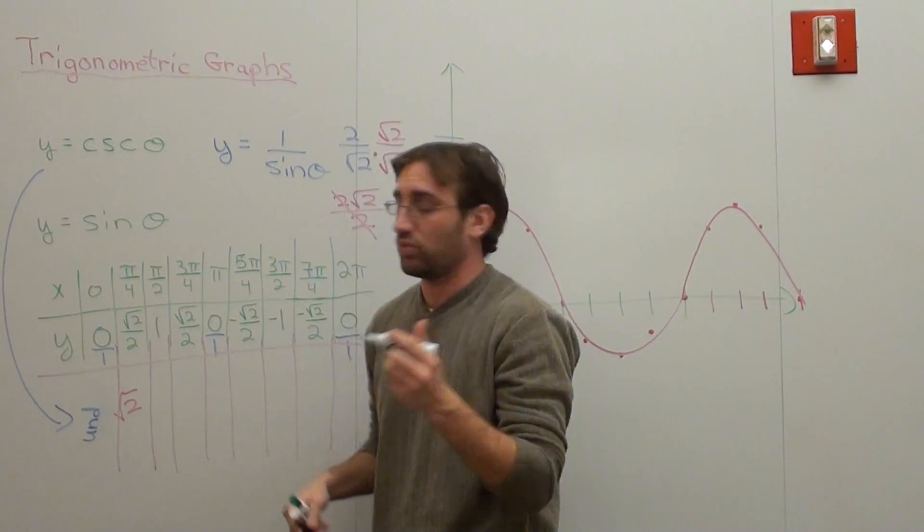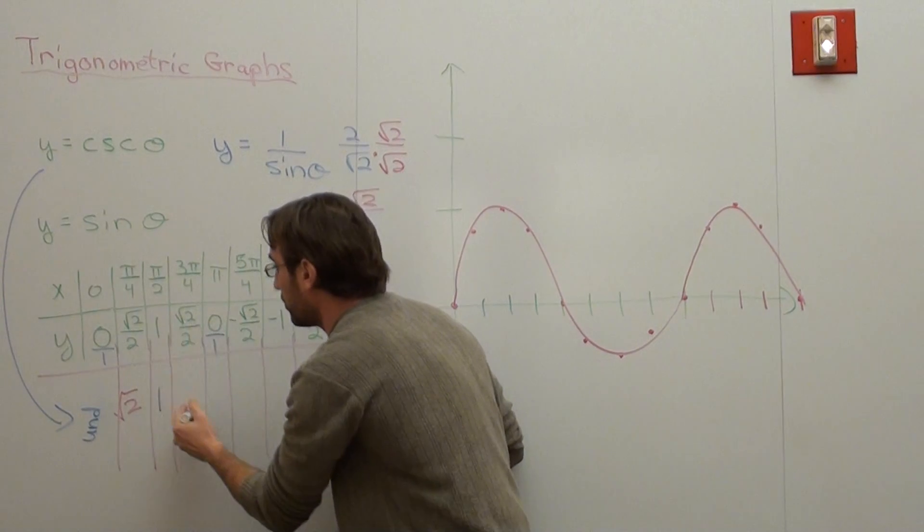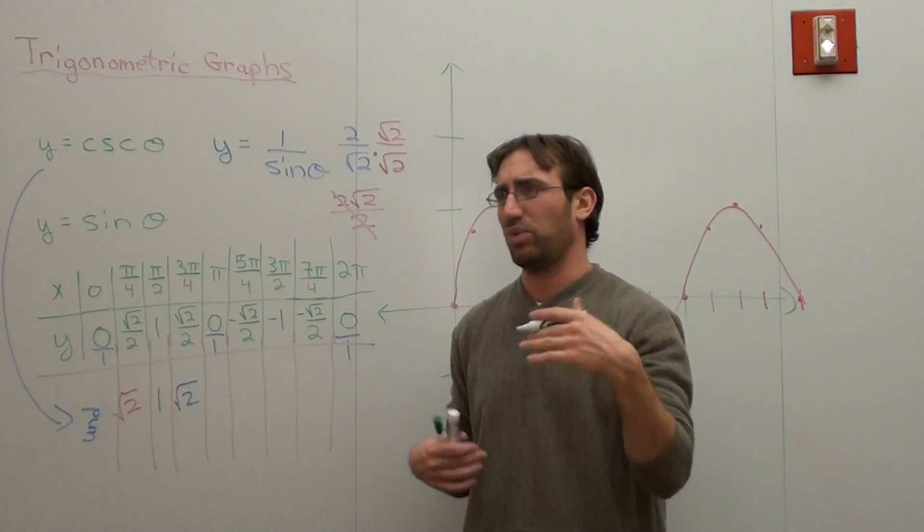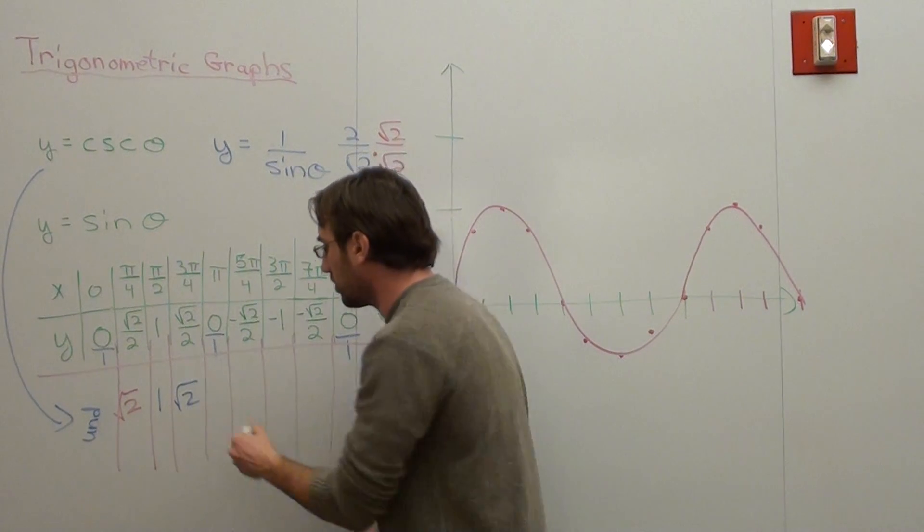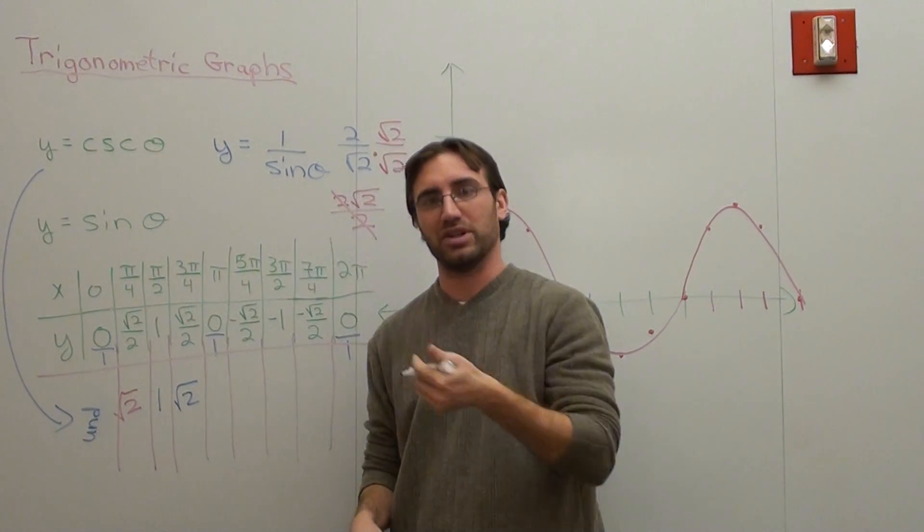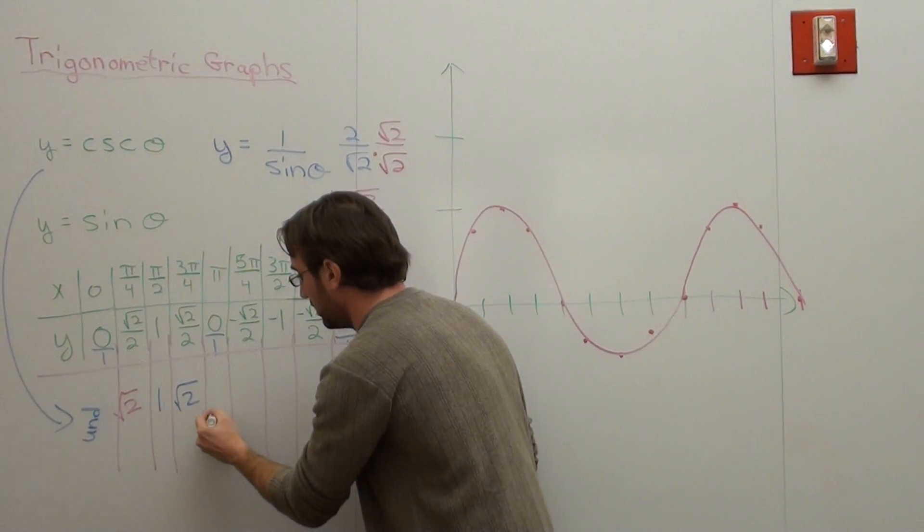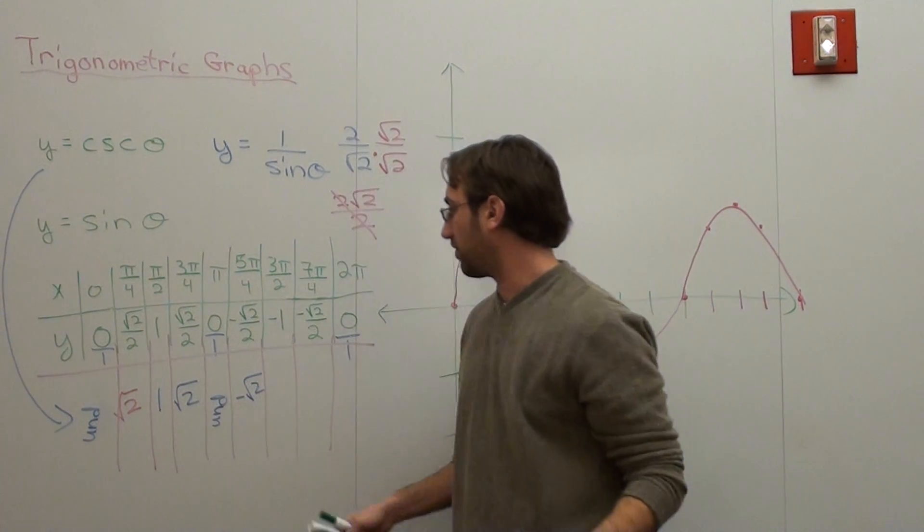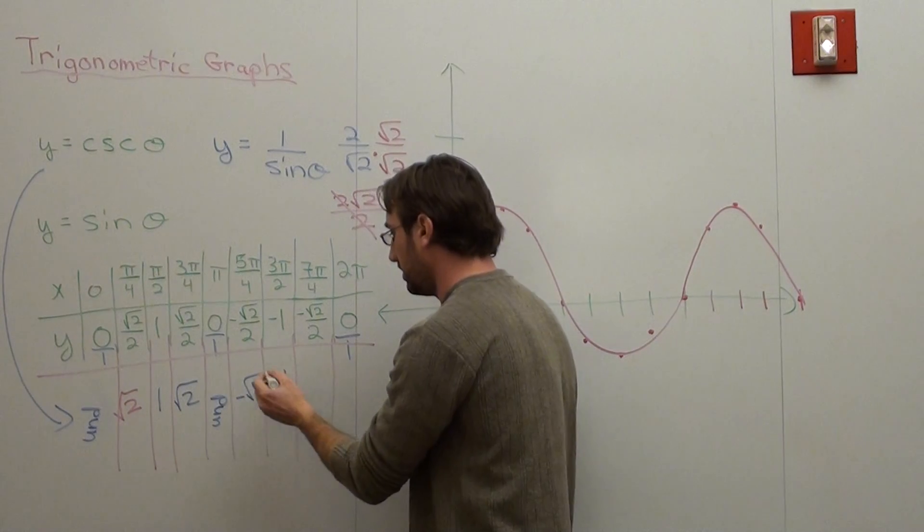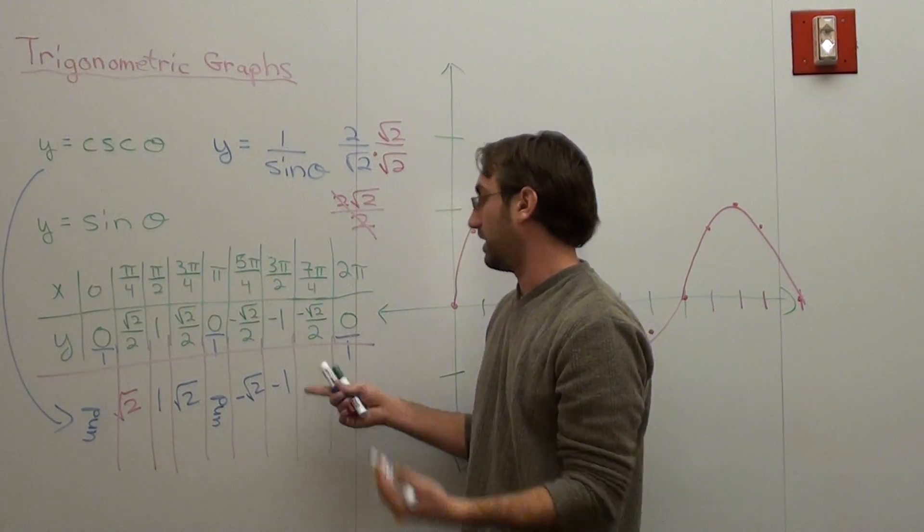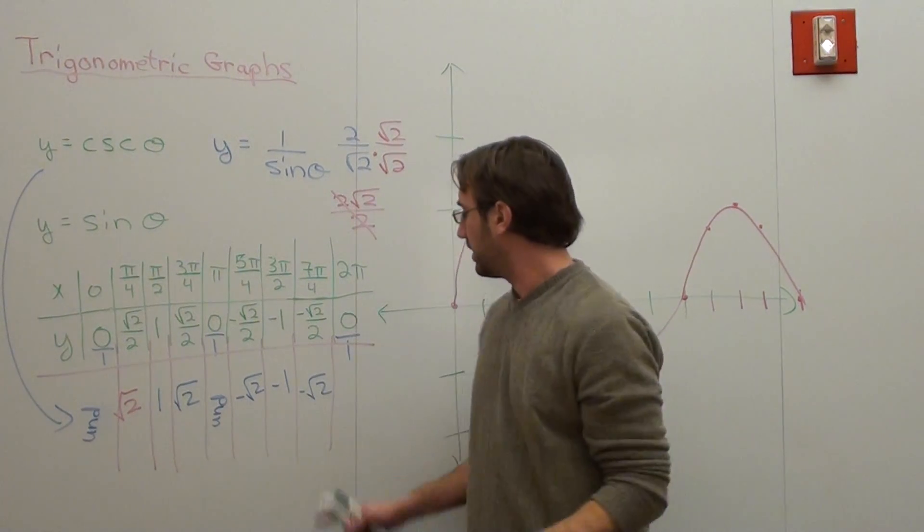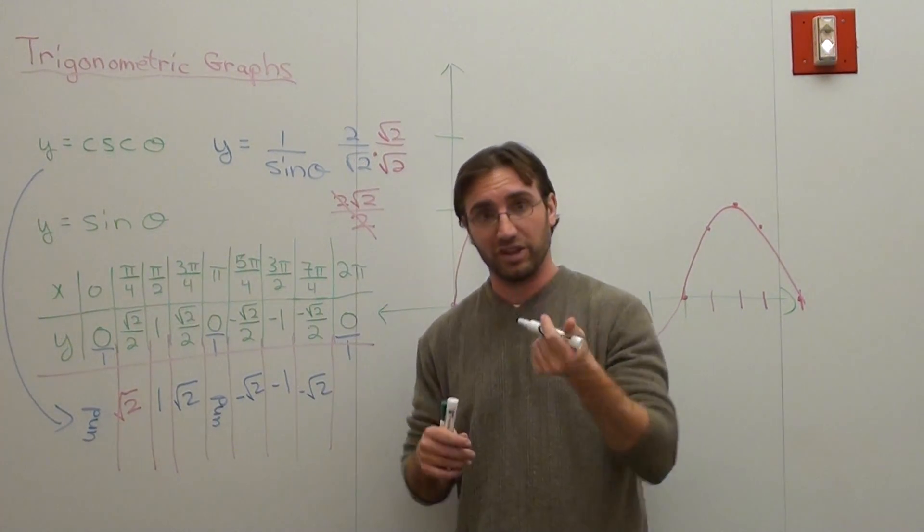When I flip one, it's still just one. When I flip root two over two, it's root two - by the way, root two in your calculator comes out to about 1.414. Zero over one, when I flip it, is one over zero - that's undefined. This is negative root two or negative 1.414, this is negative one, this is negative root two or negative 1.414.